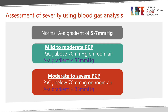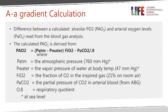This classification has direct management implications. If a child is hypoxic, they require oxygen. For the moderate-to-severe classification of Pneumocystis pneumonia, you will also need to add steroids. The AA gradient formula requires FiO2, PaCO2, and PaO2. Thankfully, many online calculators are available so you don't need to calculate it manually — you simply enter those values to get your AA gradient.